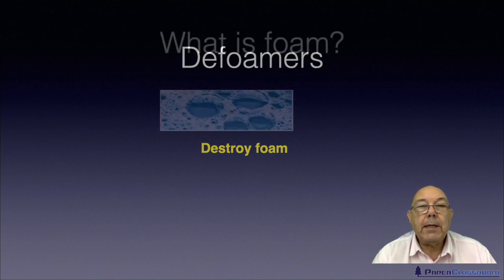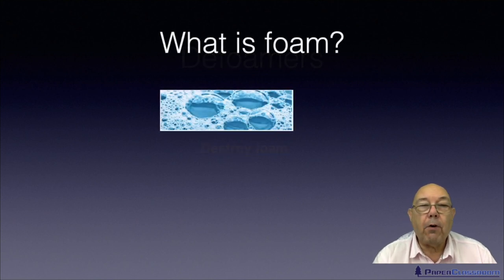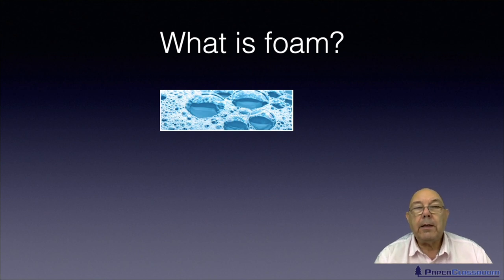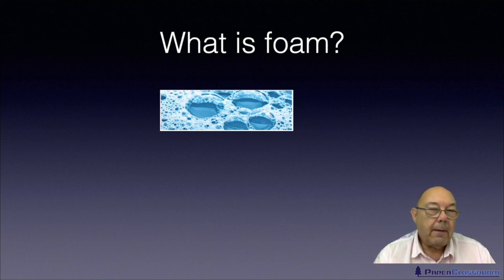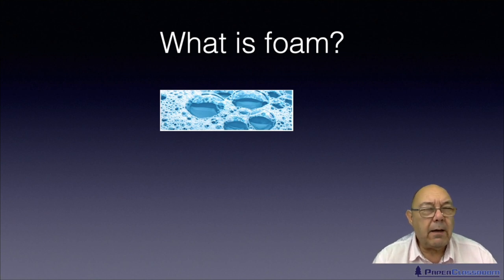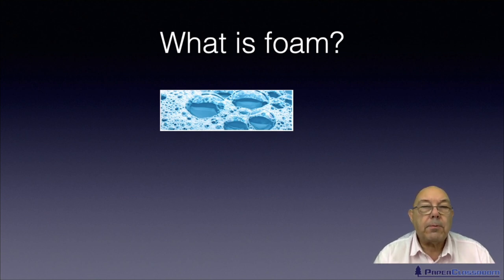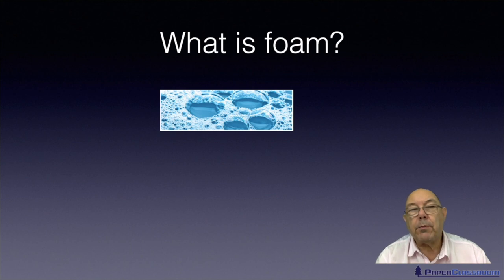So the first question is: what actually is foam? Well there's a picture of foaming here. It's a collection of bubbles and it causes all sorts of problems in the paper industry. You can get foam spots in your sheet. It can give you the clue that you've got air in your stock, which can cause formation problems and therefore strength problems.